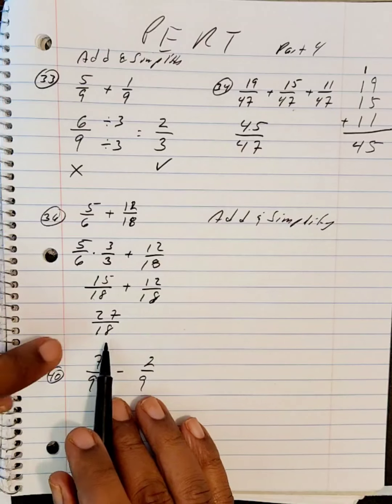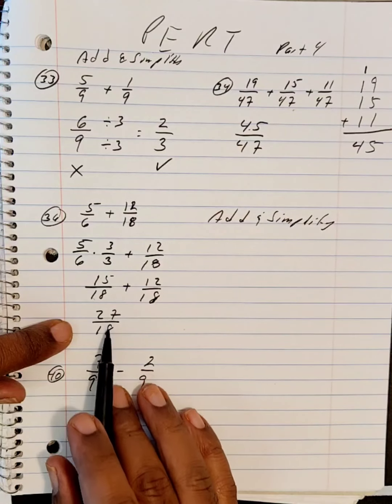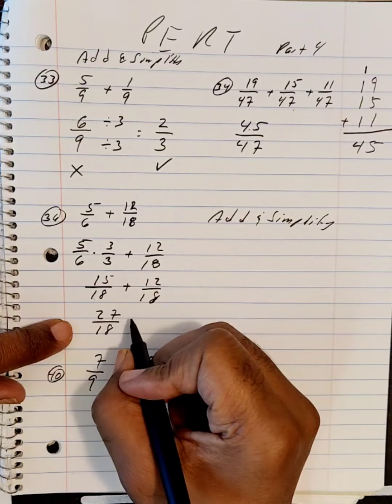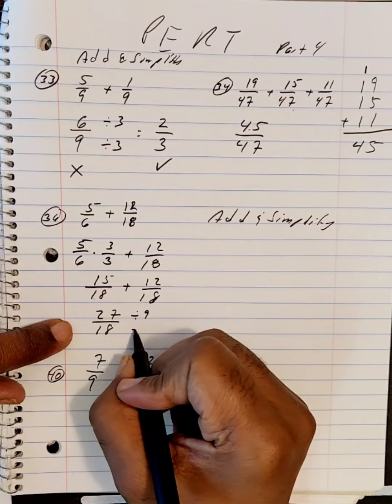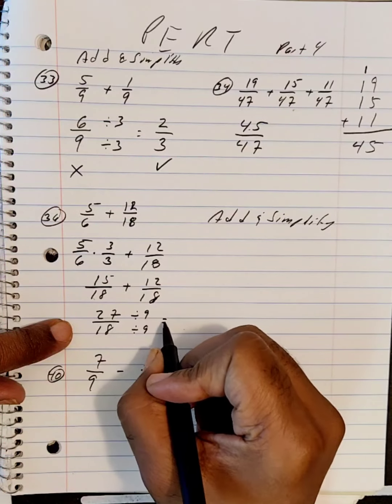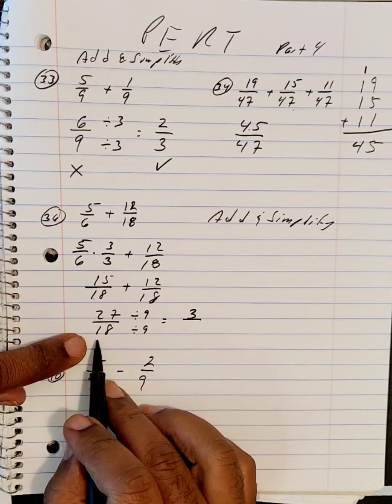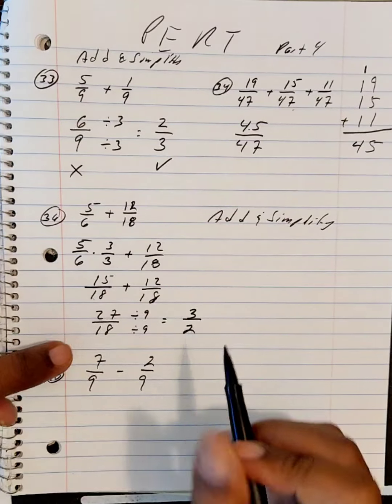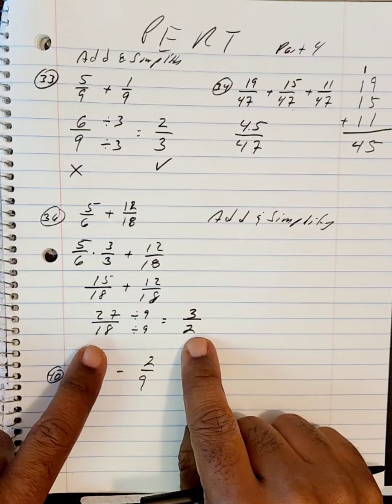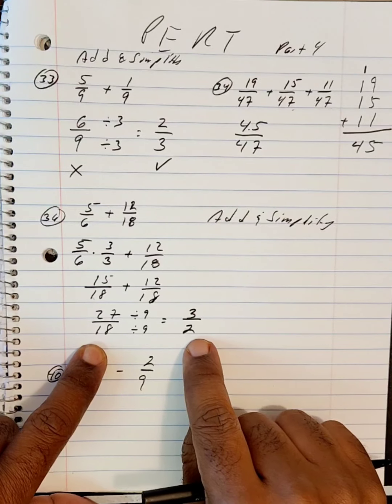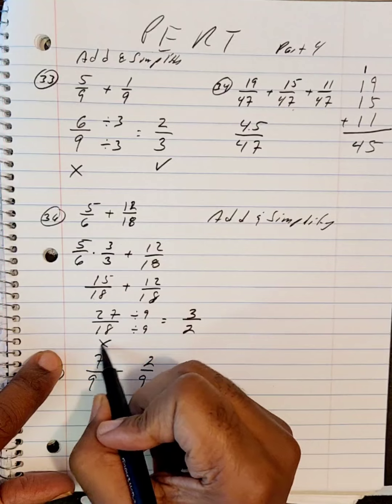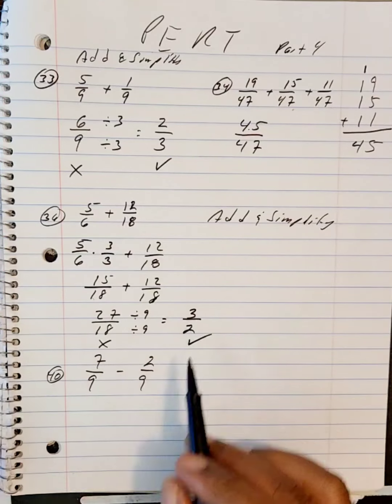Now, remember they said simplify, so this will be one of the choices. But I can divide both of these by 9. 27 divided by 9 is 3, and 18 divided by 9 is 2. So they're going to give you two choices: 27 over 18 and 2 over 3. Do not choose this one. Choose instead 3 over 2.